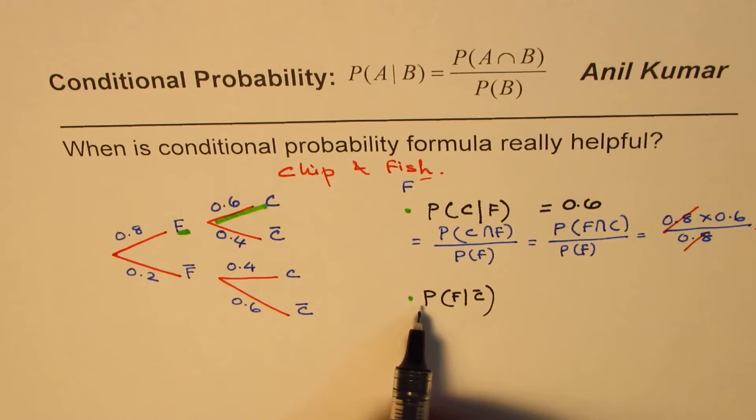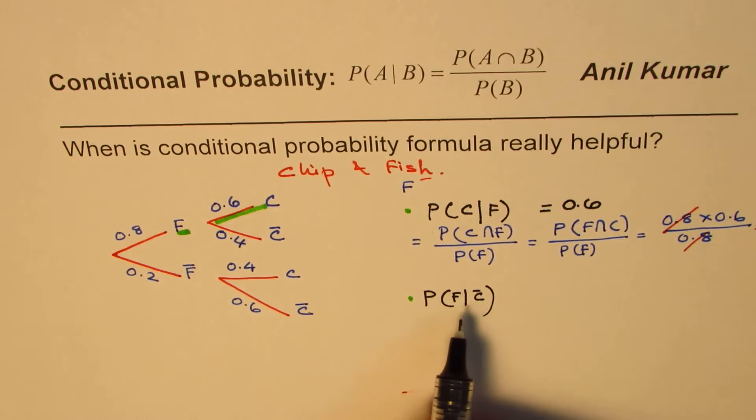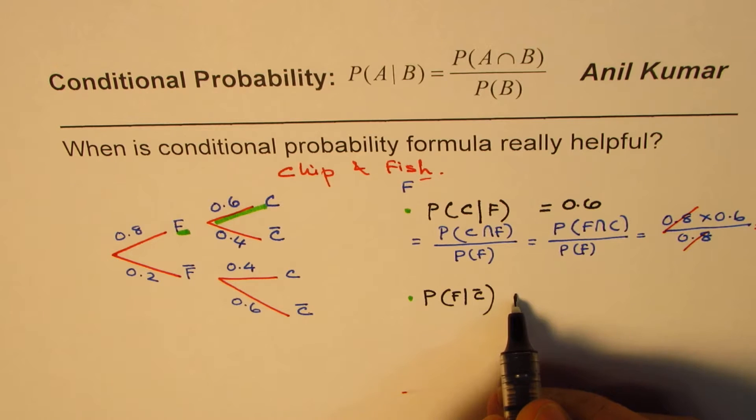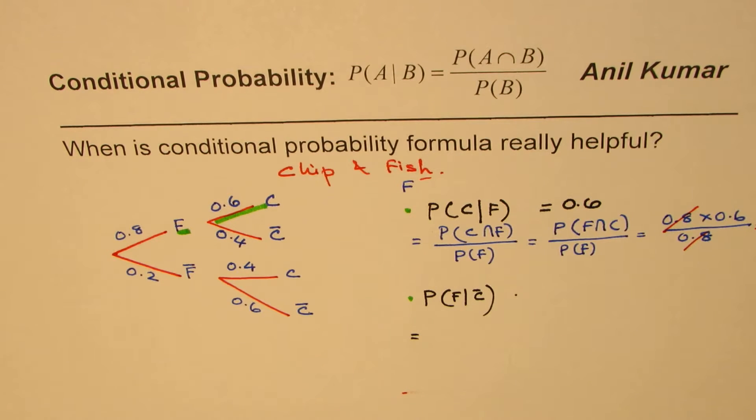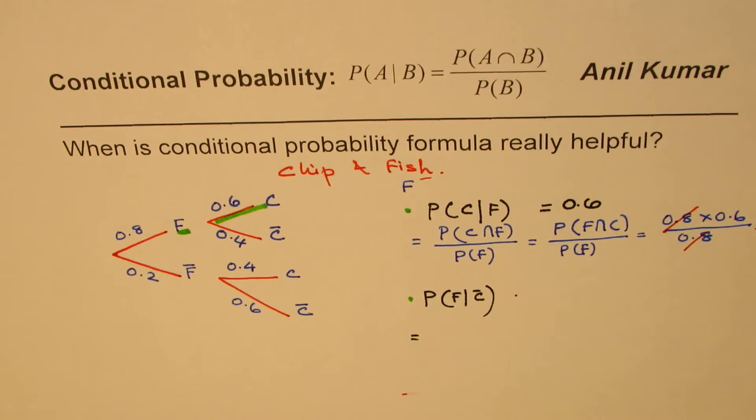What is the probability that a customer will order for fish when we know that that customer is not taking chips? In this case, direct working is not that easy. So in this case, formula becomes very important. Now here, let us apply the formula and find the result.